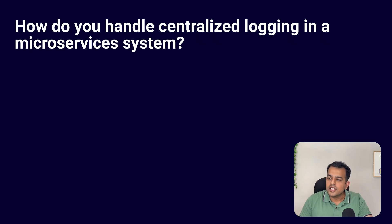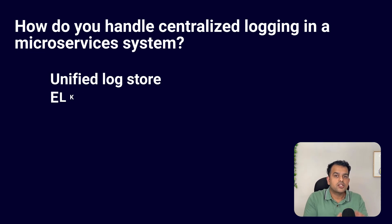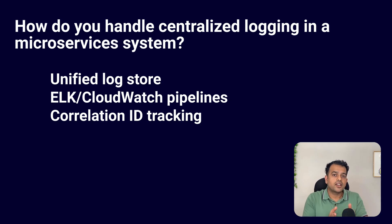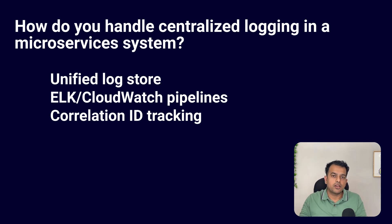The interviewer asked: how do you handle centralized logging in your microservices system? Each microservice writes logs to a centralized system — examples include CloudWatch, Splunk, or the ELK stack. These logs are collected, stored, and searchable in one place. This helps debug distributed issues easily because each request has a correlation ID, which helps track the request across multiple microservices. In Splunk, for example, you can filter requests by instance number, logs, or correlation ID.